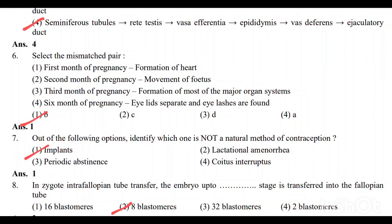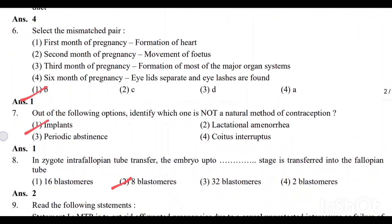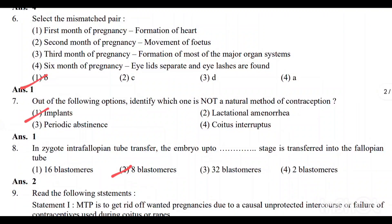Question number 6: Select the mismatched pair. B is mismatched, so option 1 is correct. Question number 7: Identify which is not a natural method of contraception. Option 1, Implants, is not a natural method of contraception.